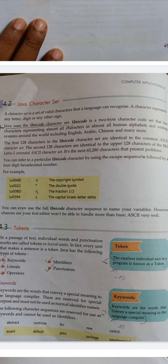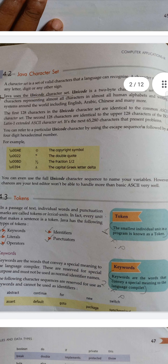If in the exam it comes — what is Unicode — you can say that it is a two-byte character code that has characters representing almost all the characters in all human-understandable languages. It can be written in any language. The first 128 characters in Unicode are identical to ASCII. Just remember: it is a two-byte character code representing almost all human alphabets.